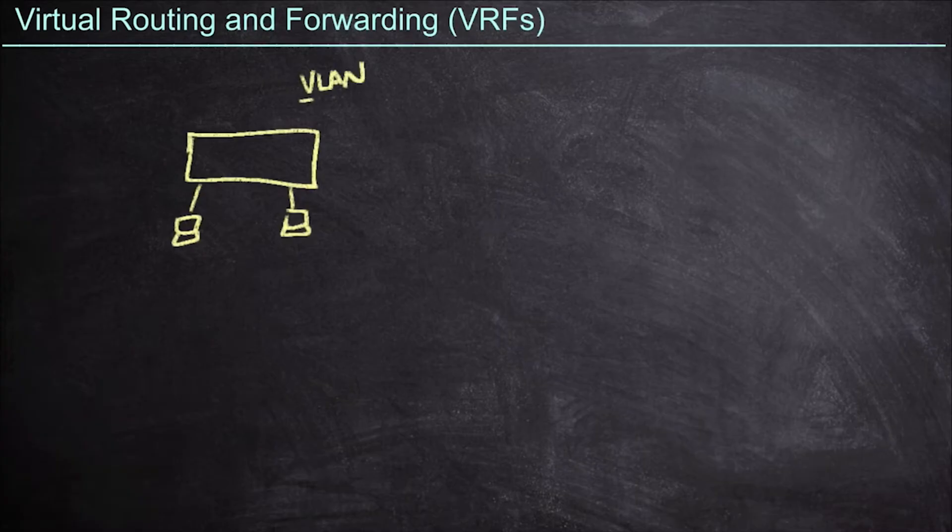The VLAN, or the virtual LAN, effectively carves up our physical layer 2 switch into multiple virtual layer 2 switches. So this is one broadcast domain, and this is another broadcast domain, and we're going to use a very similar concept with a VRF.